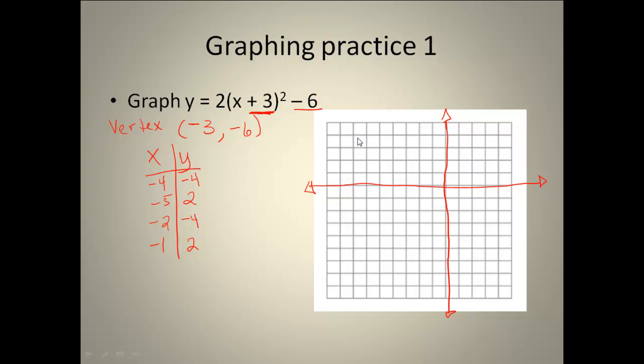Once we have all of our points, you can go ahead and plot them. And this will get us our graph. And if you look at our graph, it opens up, which it should because our a is positive. It's kind of narrow because our a is 2. So we can go ahead and sketch that curve in there. And we're done with it.